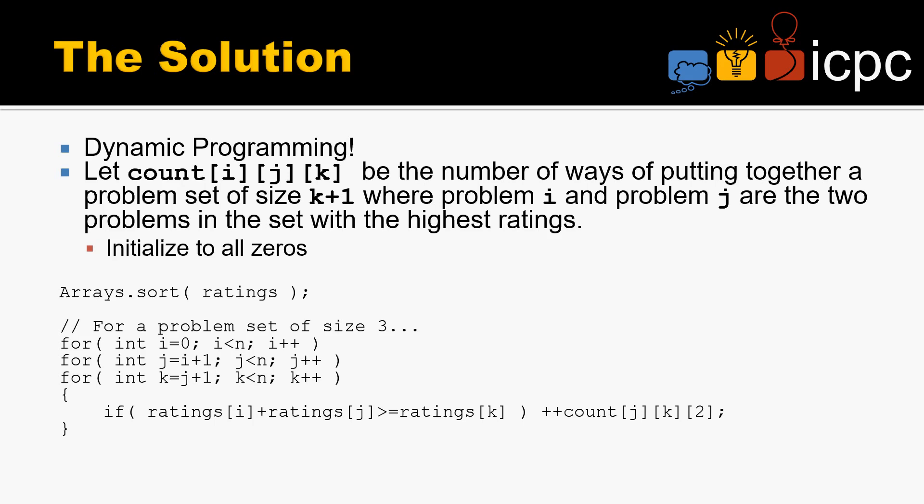Sort the ratings, and then for a problem set of size 3, we're going to start with the base case. Go through all of those combinations, and if i plus j is greater than or equal to k, we're going to increment the count of [j][k][2].